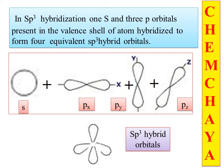Since you have one s and three p atomic orbitals combining, that is four atomic orbitals combining: 1s and 3p. When you combine four atomic orbitals, you get four hybrid orbitals — four sp3 hybrid orbitals. These hybrid orbitals then undergo overlapping to form the bond.